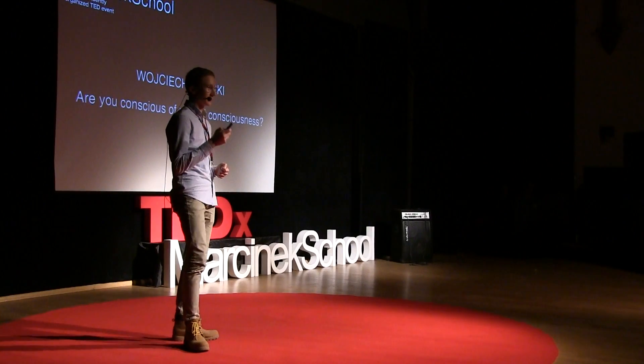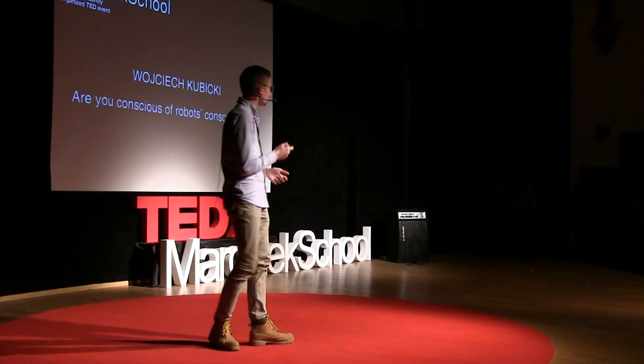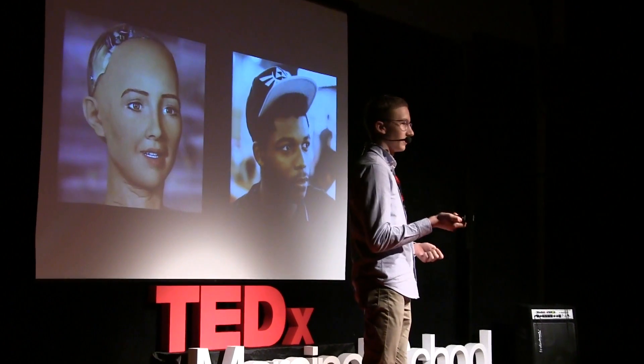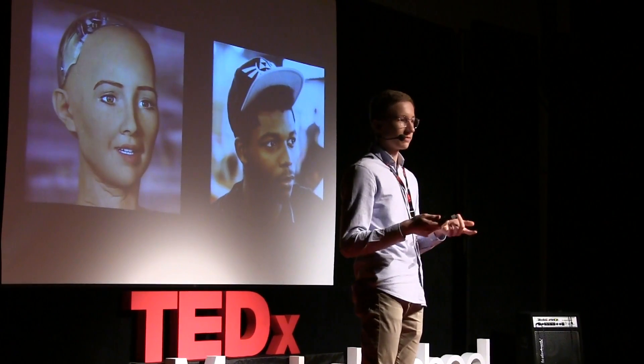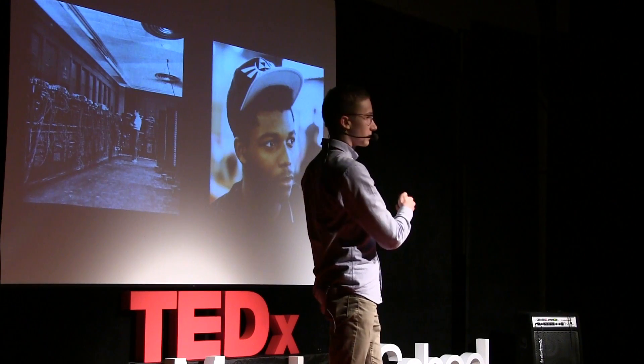Today, I'm going to start my presentation with a question. On which photo is there a human? Pretty simple, it's the one on the right. What about now? Still pretty simple, it's the one on the right. But on these two photos, we can see how fast artificial intelligence has evolved over the past couple of years.